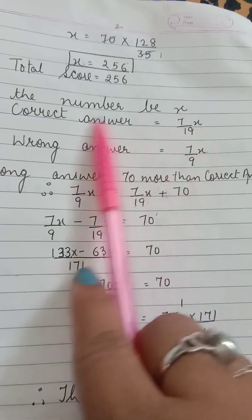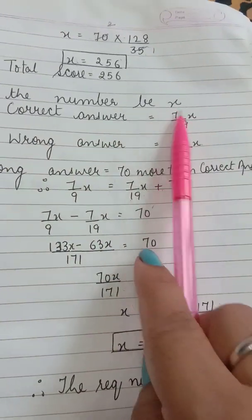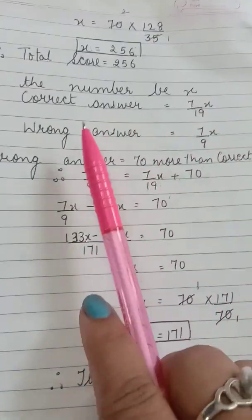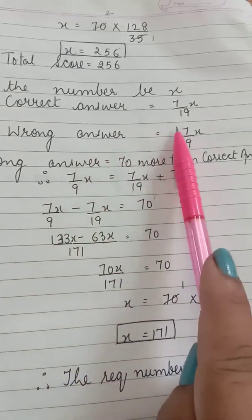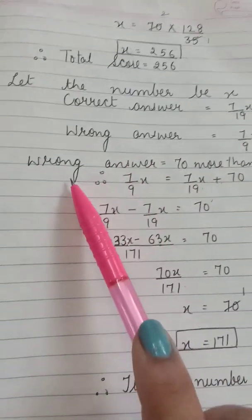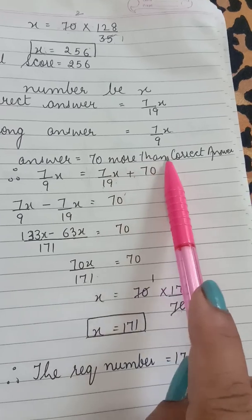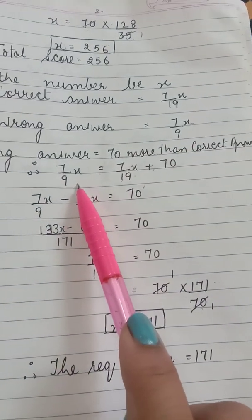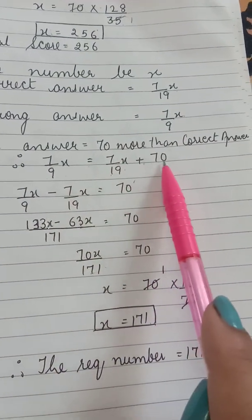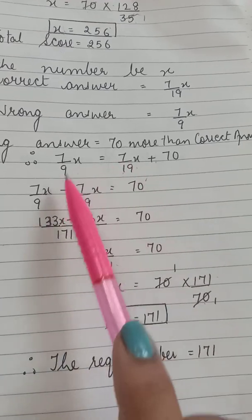Let the number be X. The correct answer is 7 by 19 of the given number. Wrong answer that child calculated was 7 by 9 of the given number. So wrong answer was 70 more than the correct answer. So 7 by 9 X is equal to 7 by 19 plus 70. Keep 70 here, take X term to the left.